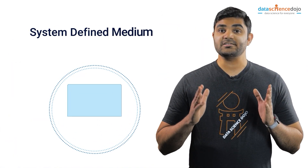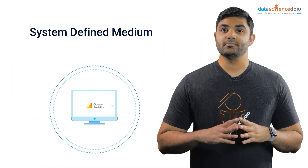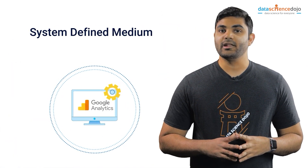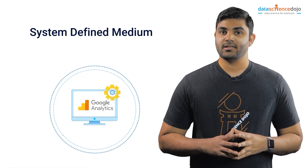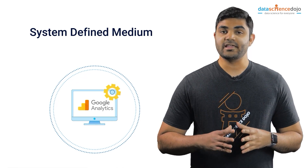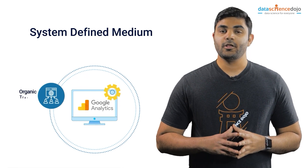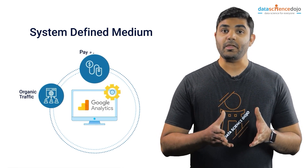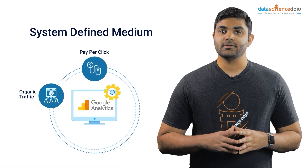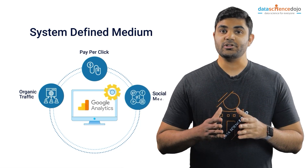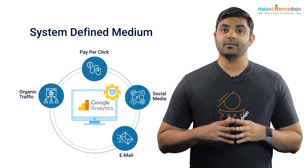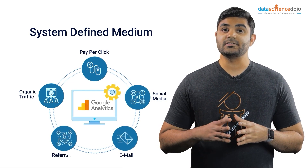A system-defined medium is pre-built into Google Analytics. Some examples are organic traffic, pay-per-click, social media, email, and referrals, amongst other mediums.